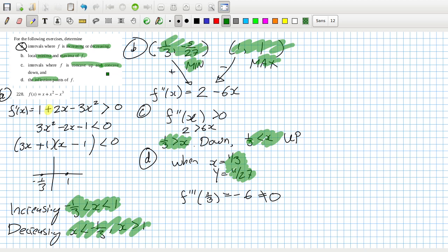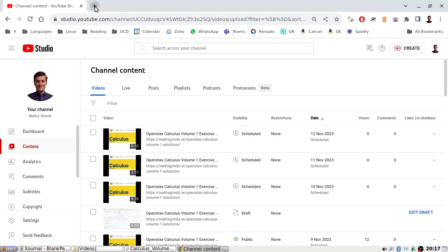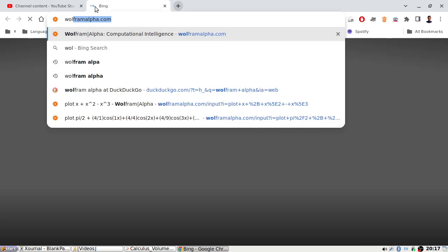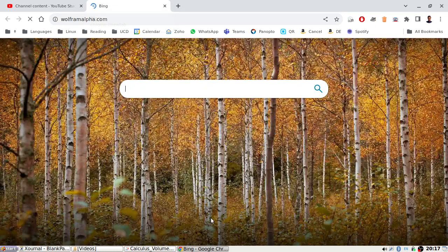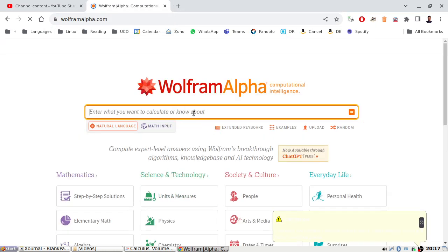But like I said I did graph it so it looked right. I guess I could graph it now for everyone here using Wolfram Alpha. Plot x plus x squared minus x cubed.